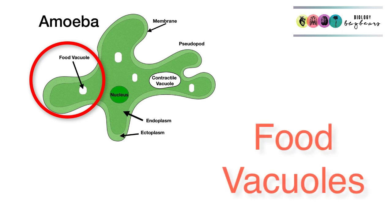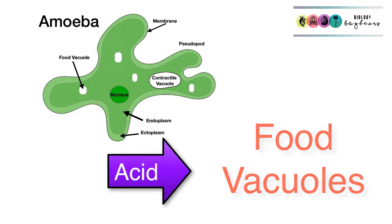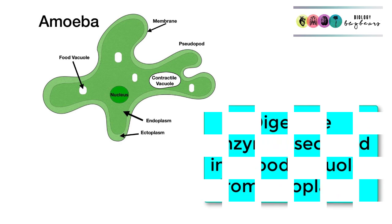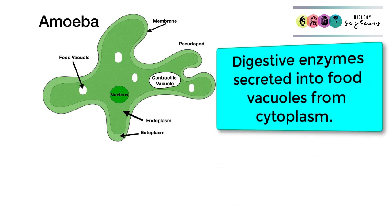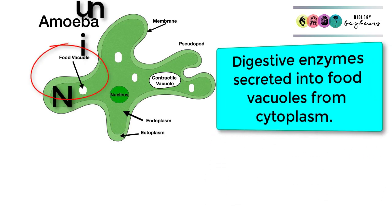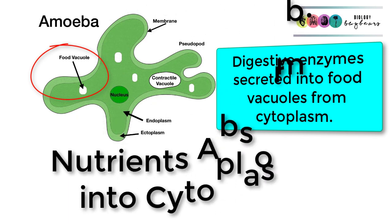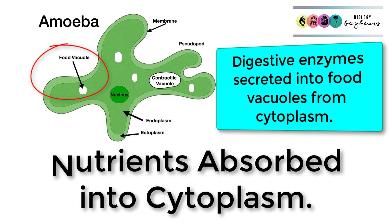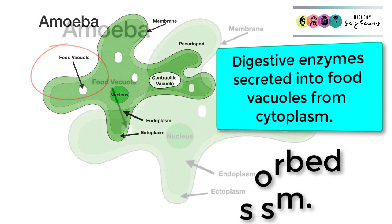Into the food vacuole, acid is sometimes secreted to kill the prey, and then digestive enzymes are secreted from the cytoplasm into the food vacuole to break down or digest that food. The nutrients are then absorbed into the cytoplasm.